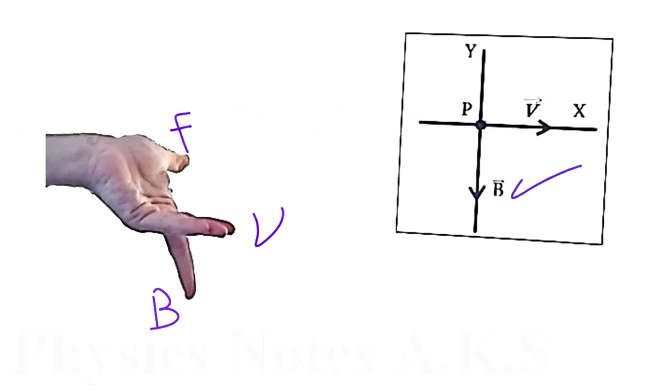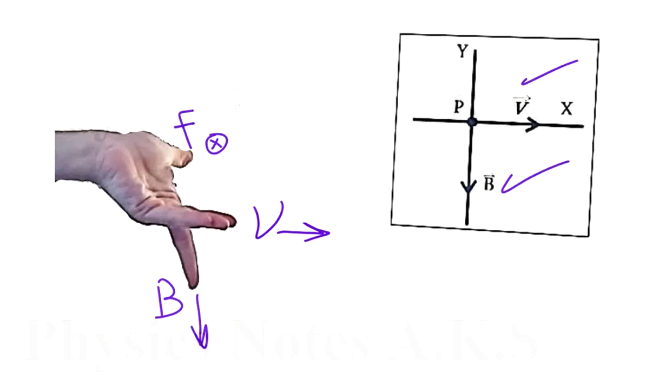The V is going to the right, and since it's a proton, so the second finger is in the same direction as V. So notice that F is going into the page, F is going into the page.